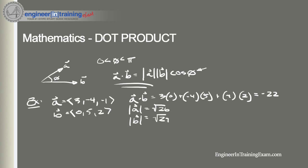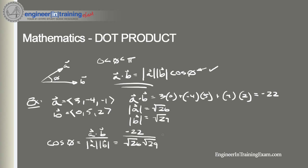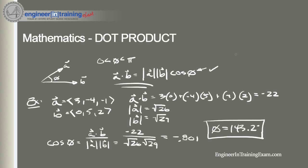Now that we have all this information, we can plug it into our formula. Rearranging: cosine theta equals a dot b divided by the magnitude of a times the magnitude of b, which is negative 22 divided by the square root of 26 times the square root of 29, equal to negative 0.801. Taking the inverse cosine gives us theta equal to 143.2 degrees. That's how we determine the angle between two vectors using the dot product and its geometric interpretation.